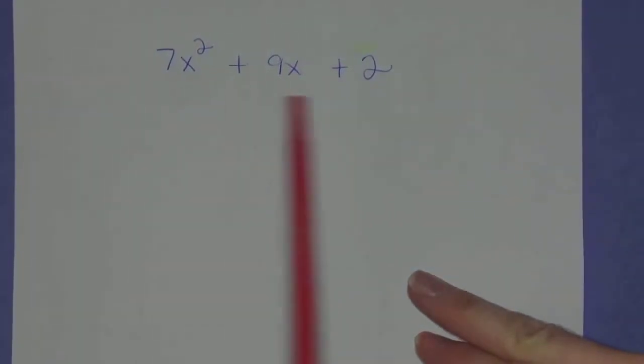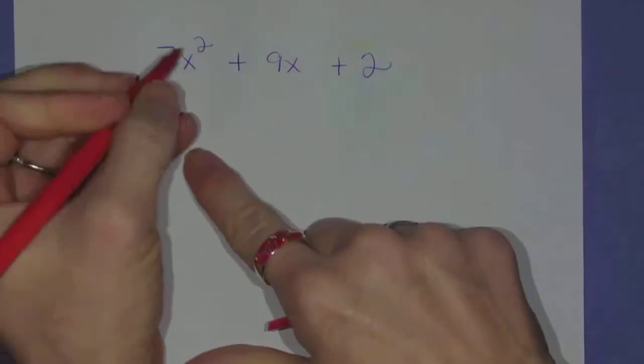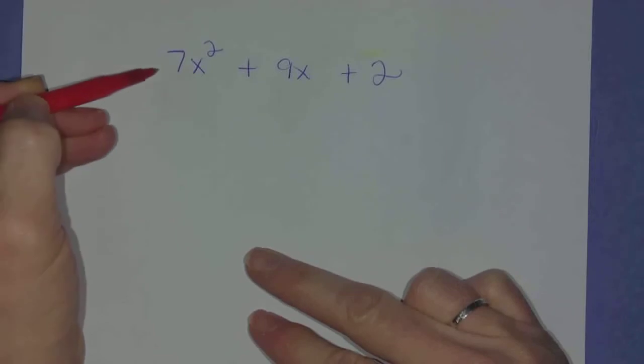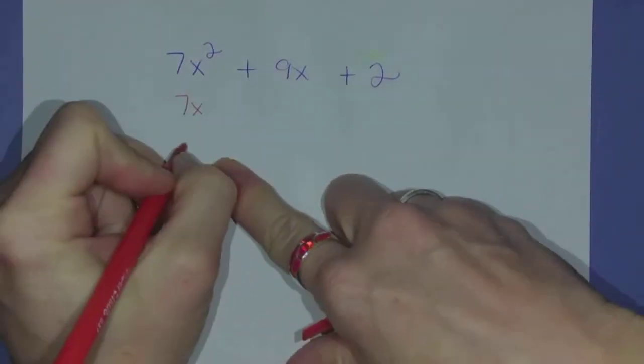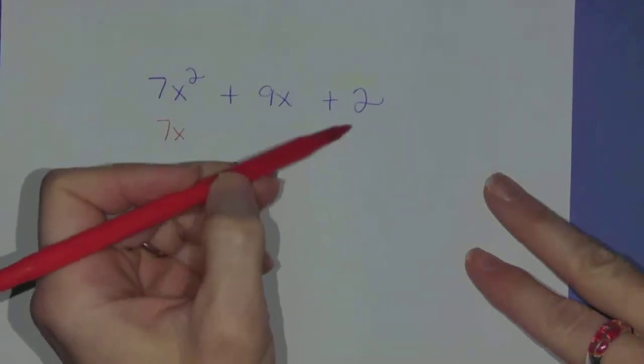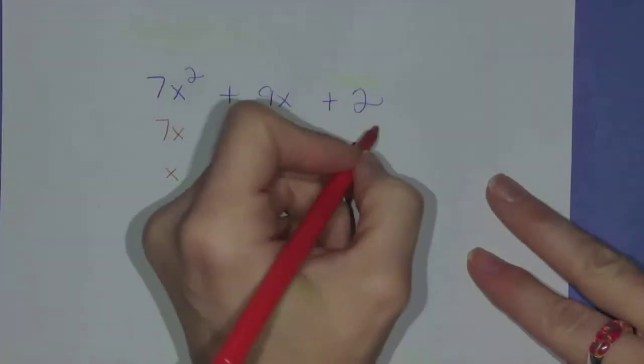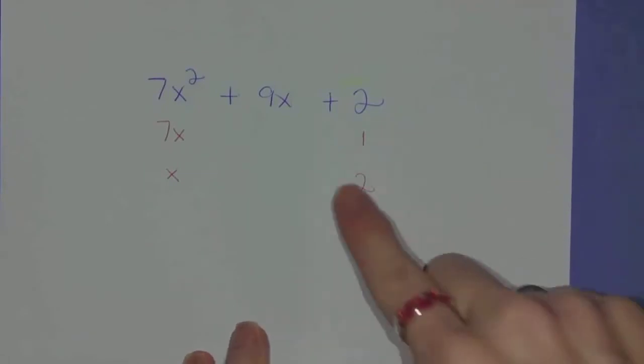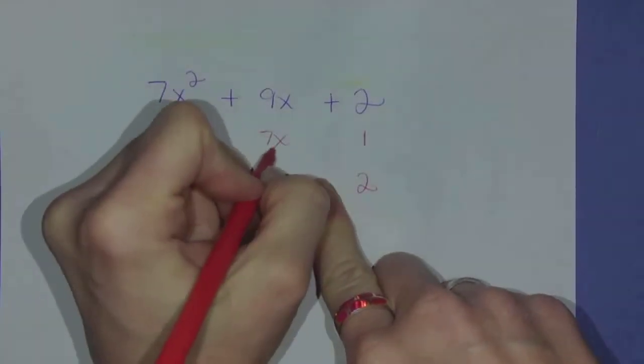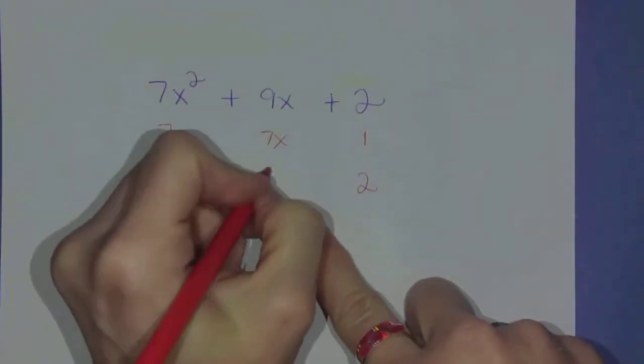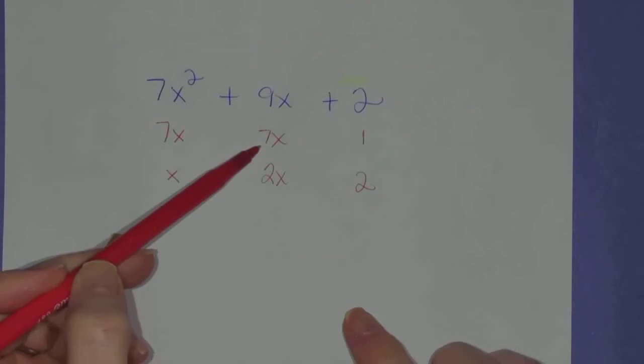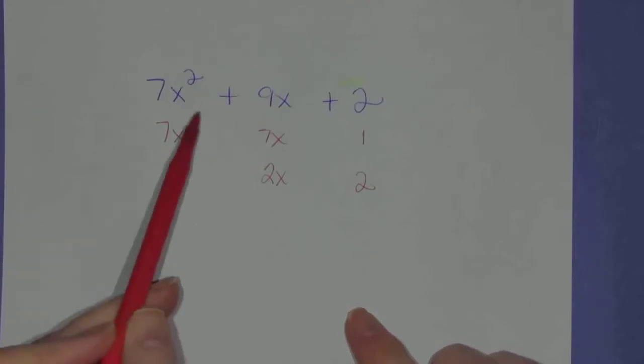Okay, so you sort of leave the trinomial as it stands. And so underneath this 7x squared, you're going to write two terms that multiply to give you 7x squared. So that would be 7x and x. And then underneath the 2, you're going to write two terms or two numbers that multiply to give you 2. So maybe 1 and 2. Now, we're going to multiply these together. 7x times 1 is 7x. x times 2 is 2x. And if you look straight up, 2x added to 7x does give me that 9x. So we sort of found the magic.